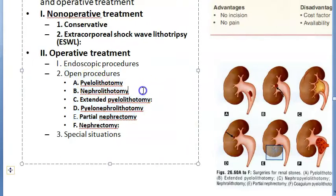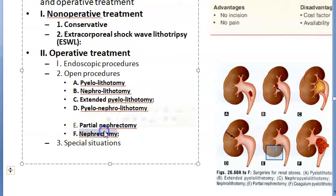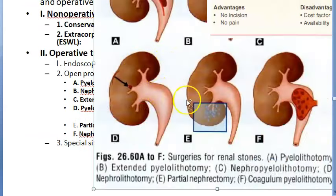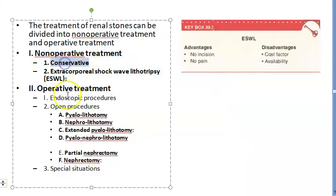Open procedures have specific names: pyelolithotomy, nephrolithotomy, extended pyelolithotomy, partial nephrectomy, and nephrectomy. Partial nephrectomy and nephrectomy involve removing part or all of the kidney. Now let's start with non-operative conservative treatment.